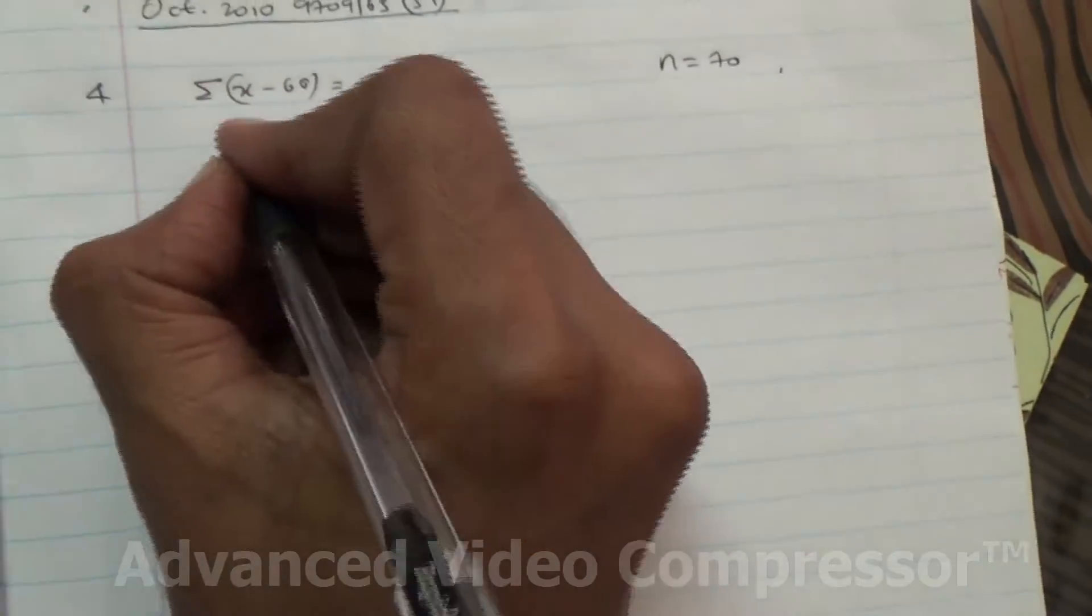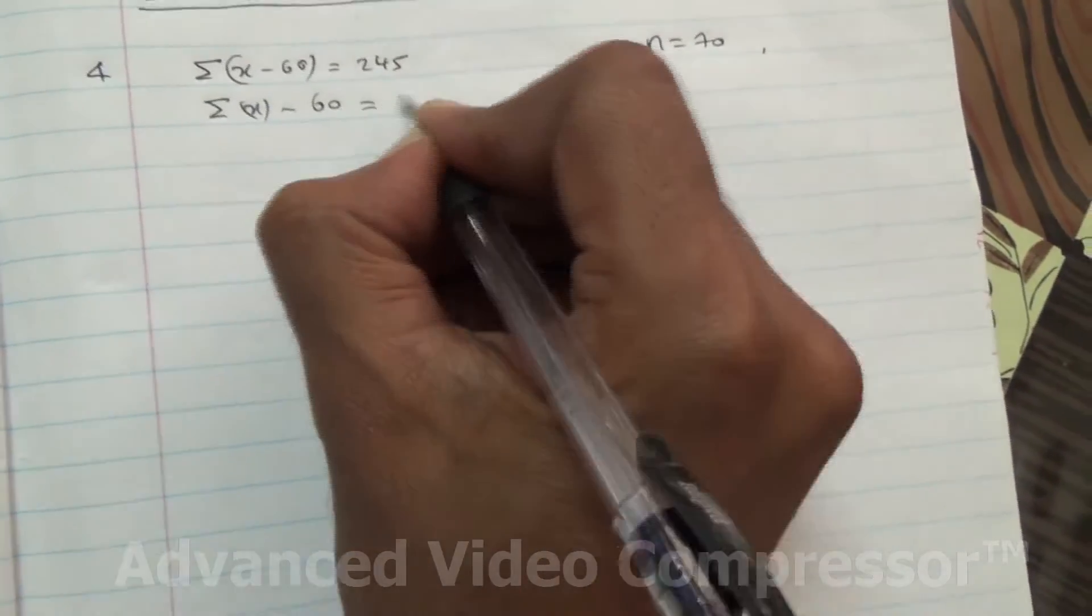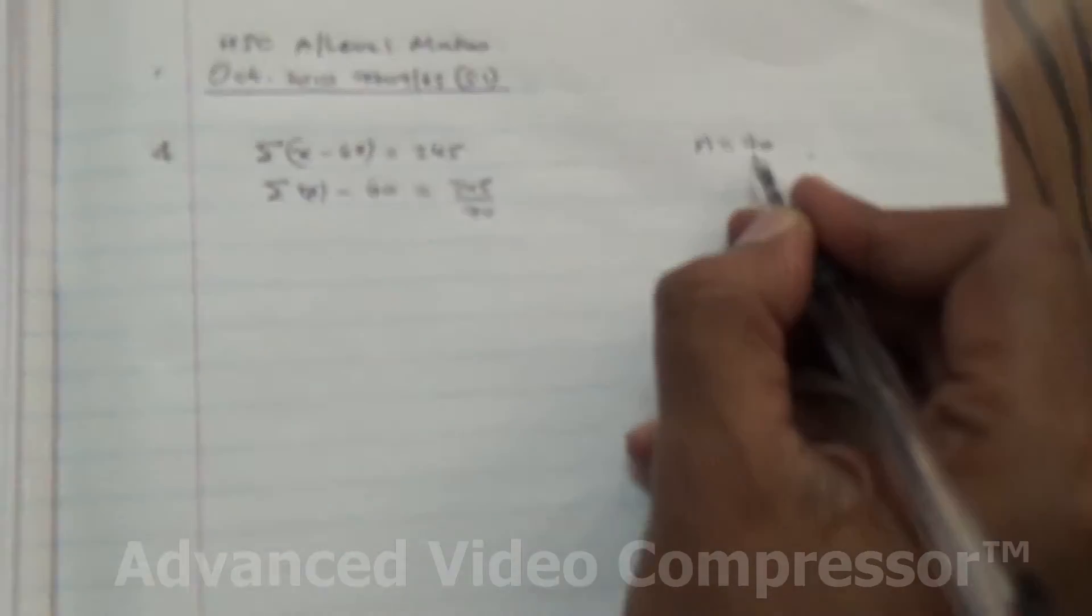Alright, so the first part. The sample size is 70. We need to calculate the mean. So what does that mean? It means that it is the summation of x minus 60 is equal to 245 divided by the sample size.